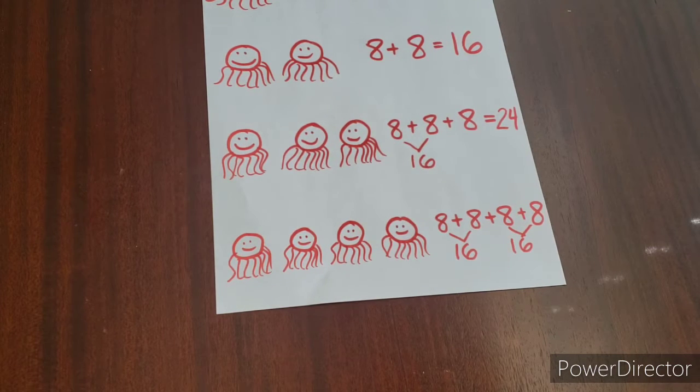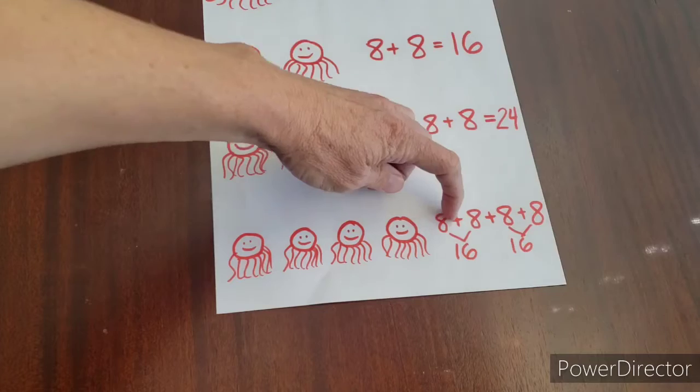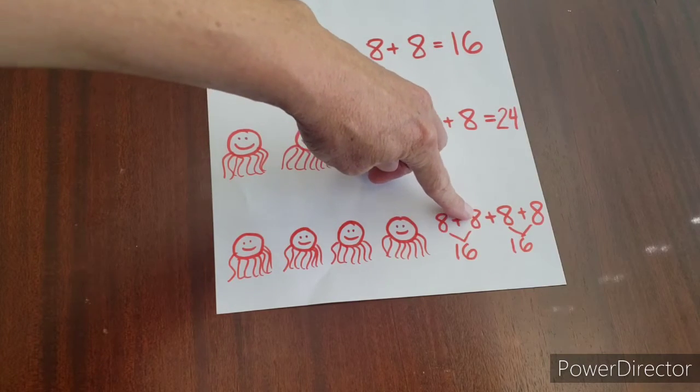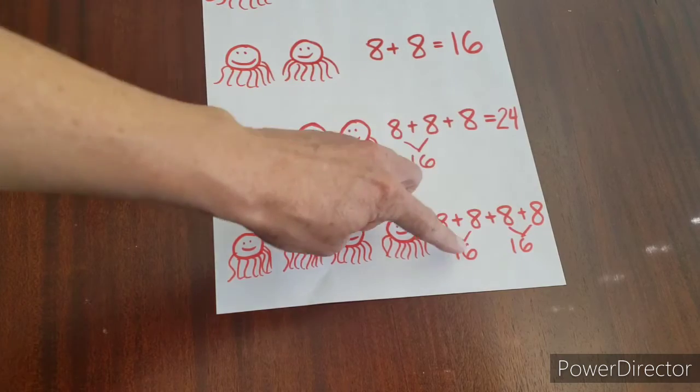But remember, math is so cool because there's kind of shortcuts to finding out the answer quicker. So what we can do is we can draw out the equation over here and say, okay, eight plus eight, and eight plus eight are 16 and 16.